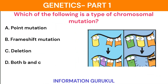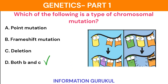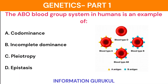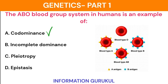Which of the following is a type of chromosome mutation? Both B and C. The ABO blood group system in humans is an example of codominance.